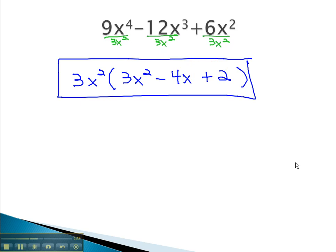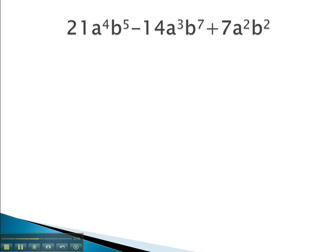Let's try another example where we identify the greatest common factor and pull it in front of the parentheses. Looking at the numbers 21, 14, and 7, we see they are all divisible by 7.